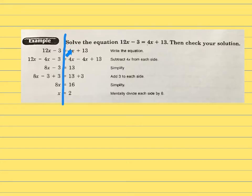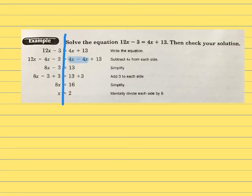We're getting rid of the 4x by subtracting it — to get rid of four things, I have to subtract four things. Whatever I do to one side, I have to do to the other. So minus 4x on both sides. That eliminates the 4x on the right, leaving just 13. On the left, 12 minus 4 is 8, so I have 8x minus 3 equals 13.